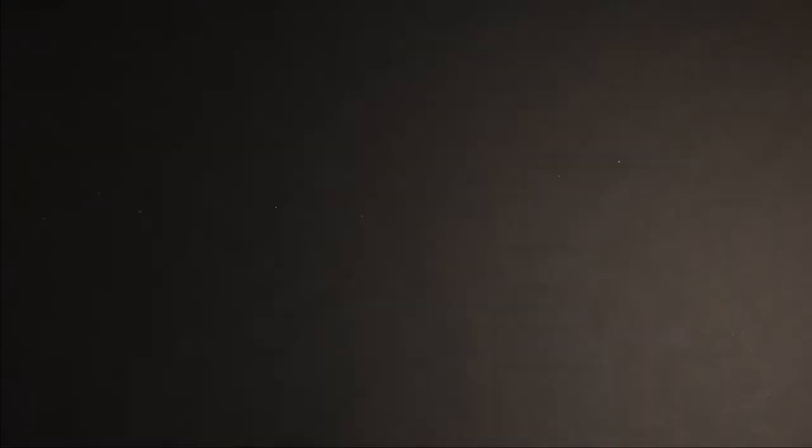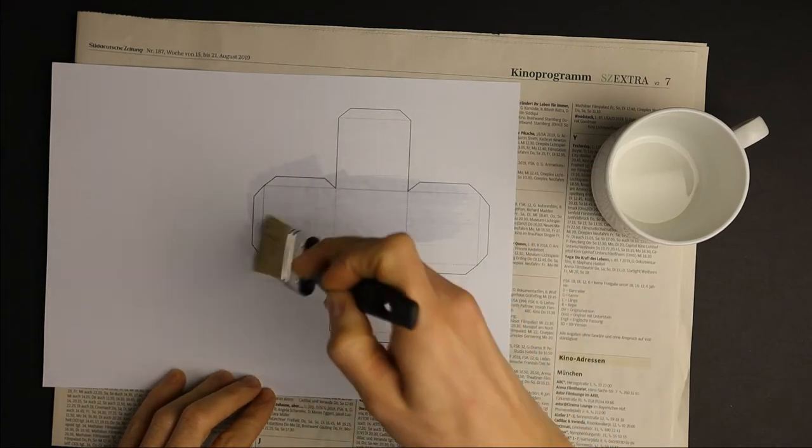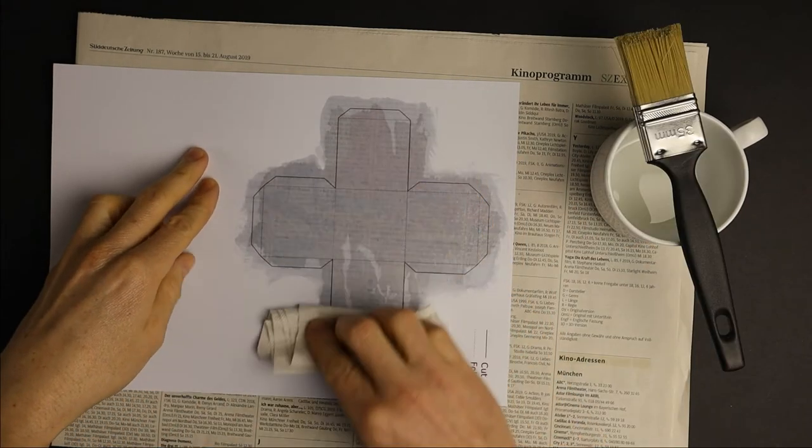To add a cool light cube to your LED, you will find a template in the video description. If you want, use some vegetable oil to make the paper more translucent.